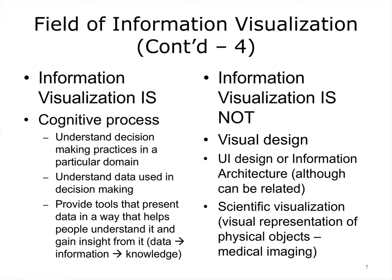Given that example, we can say that information visualization is really a way to support human cognition. It requires understanding of decision-making practices in a particular domain. Understanding helps designers develop tools that present data in a way that improves understanding and insight, and helps to convert data to information and then to knowledge. Information visualization is different from visual design in that it primarily focuses on supporting cognitive processes. It is different from user interface design or information architecture. Not all interfaces involve information visualization, although many do.